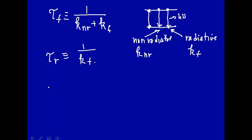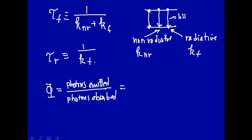Now if we look at quantum yield — the photons emitted divided by the photons absorbed — that equals the rate constant for fluorescence kf divided by the rate constant for non-radiative decay plus the rate constant for fluorescence. Note that if it only comes out by fluorescence and there's no non-radiative decay, the quantum yield would be one.